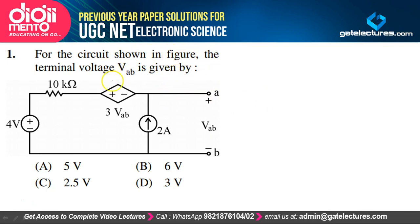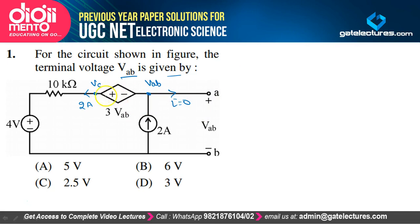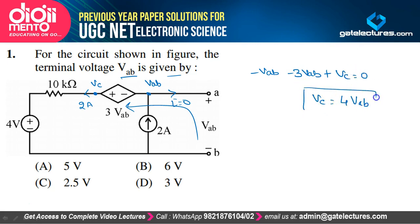For the circuit shown in the figure, the terminal voltage Vab is given by what? You can see this is open-circuited, so no current will flow here — current equals zero. The current that will flow in this branch will be equal to 2 ampere. Let the node voltage at this node be Vc. The voltage appearing across the 2-ampere current source is Vab, since Vab and 2 ampere are connected in parallel. Applying KVL: minus Vab minus 3Vab plus Vc equals zero, so Vc = 4Vab. This is the first equation.